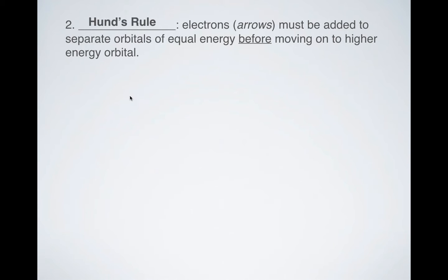Next up, we have the famous Hund's rule named after a scientist named, yes, you guessed it, Dr. Hund. So electrons must be added to separate orbitals of equal energy before moving on to higher energy orbitals. What that means is you have to kind of picture it like this. Electrons are lazy, but electrons like their space. So I like to think about it like if you were on a bus or something.